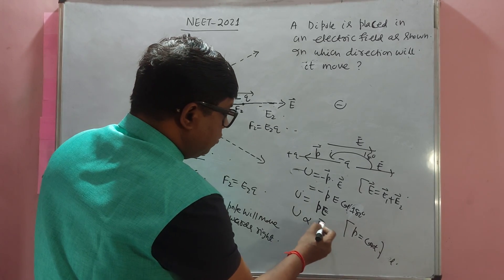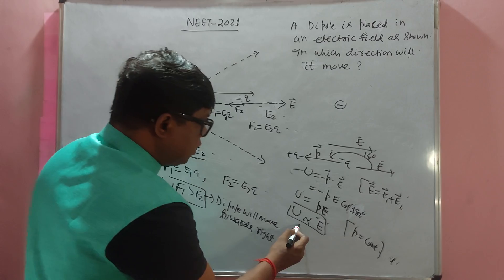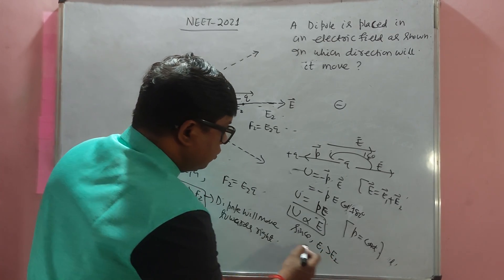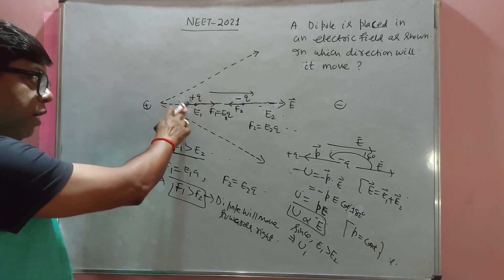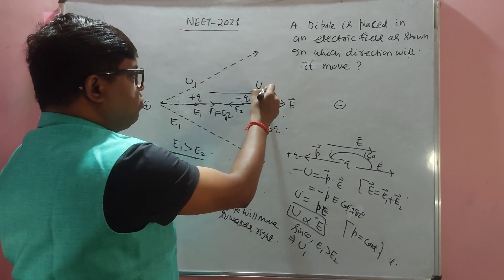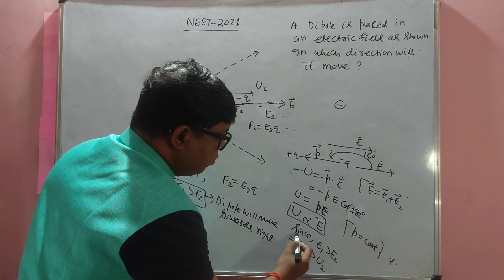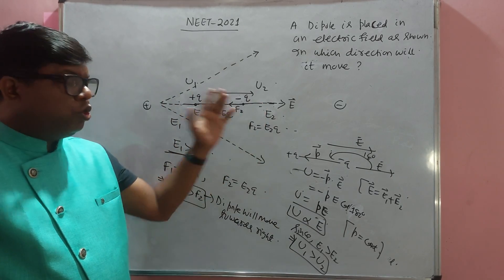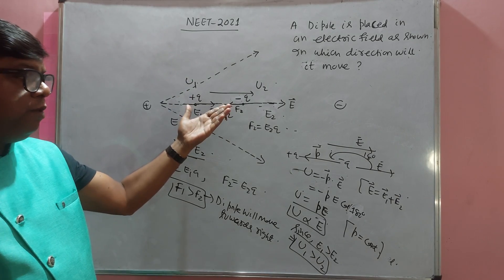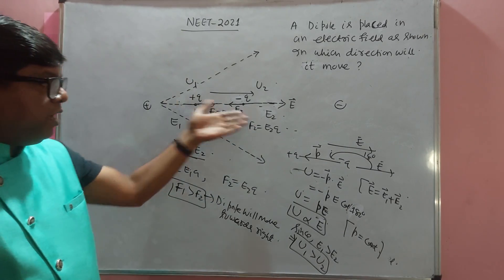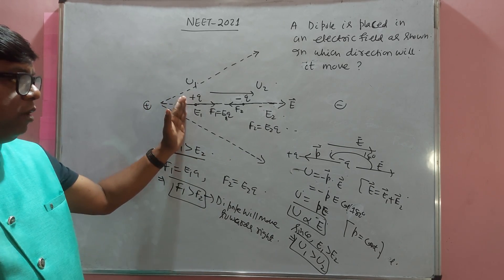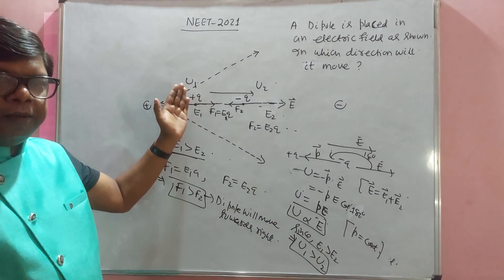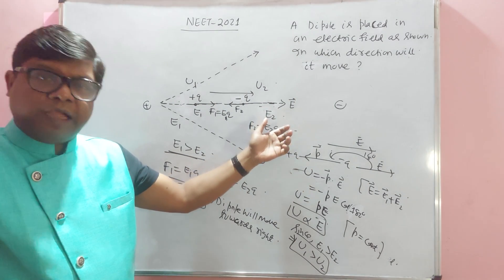Since U is proportional to E and e1 is greater than e2, the potential energy on the left side is greater than on the right side. Therefore, the dipole moves from higher potential energy to lower potential energy — that is, from left to right. So the dipole moves towards the right. Thank you very much.